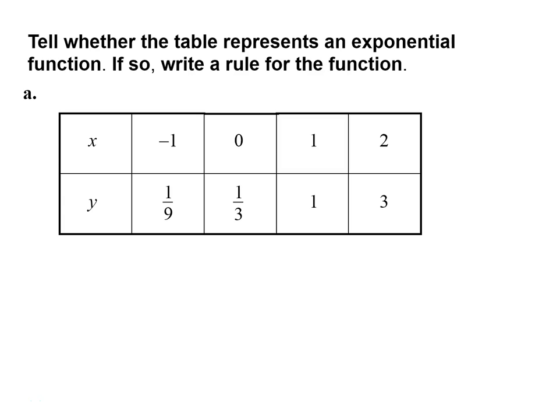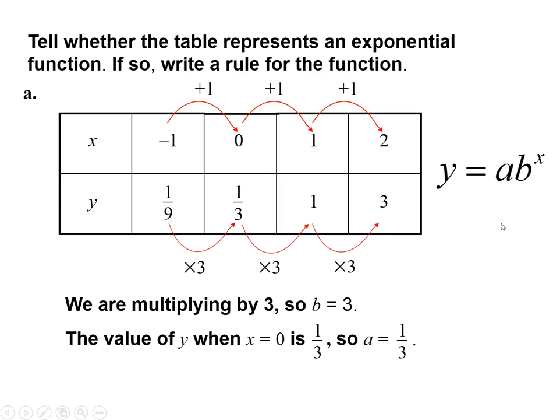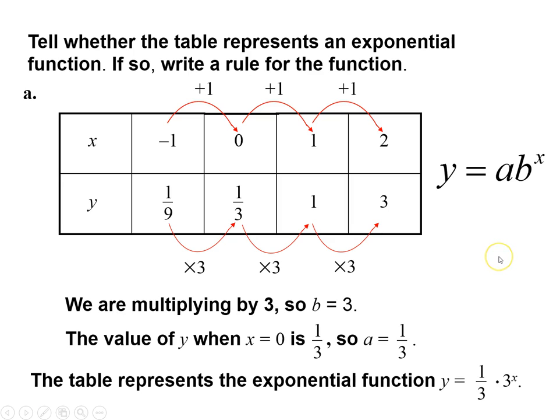All right, so in this case you can see as x increases, y is also increasing. As x goes up, y is going up, therefore we know we're multiplying by 3, so my base is 3. The starting point here is going to be 1/3, so that would be 1/3 times 3 to the x power. This would be exponential growth because my base is 3—it's tripling each time.